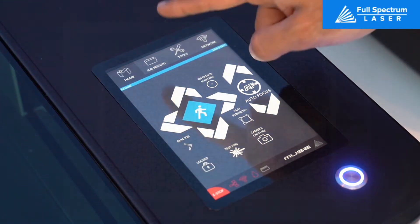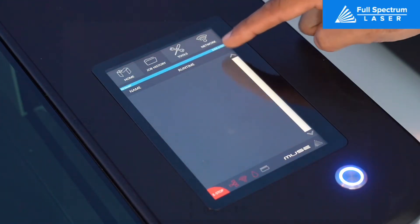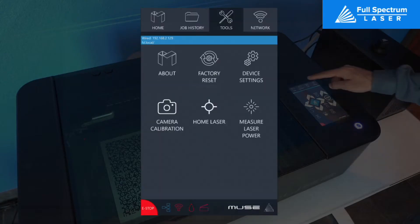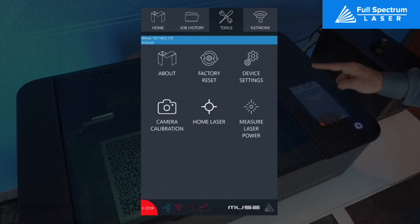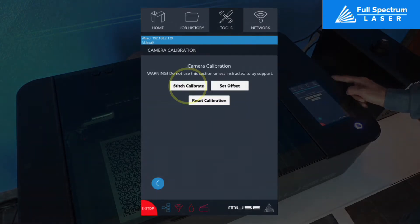Ensure that there are no jobs active on your machine. Check the tools tab on the LCD screen of your machine. Select camera calibration and lastly stitch calibration.